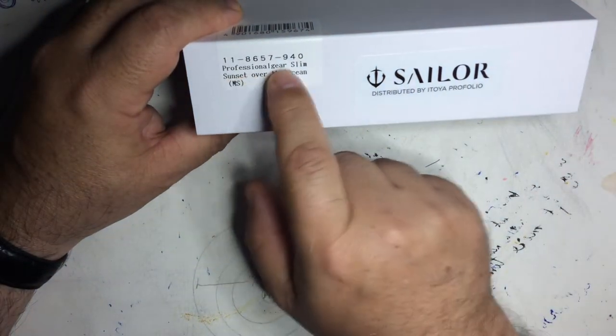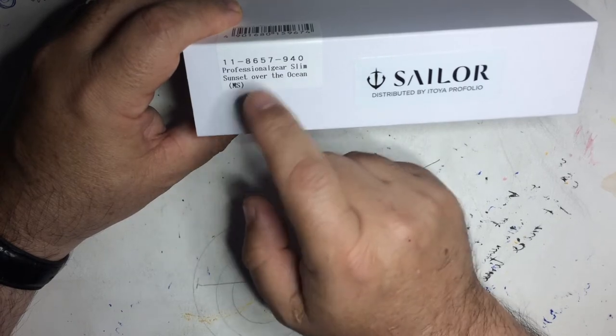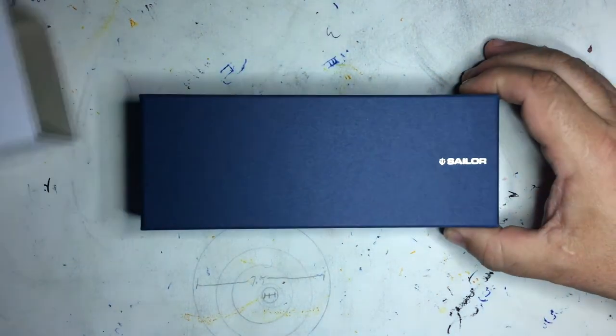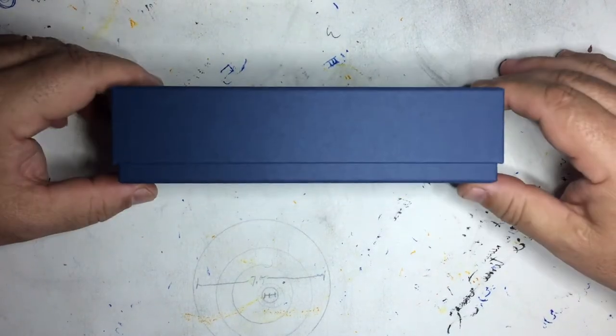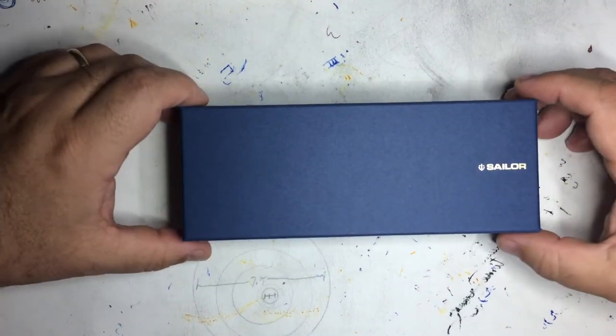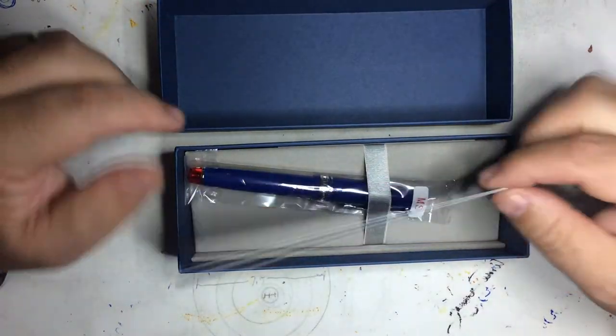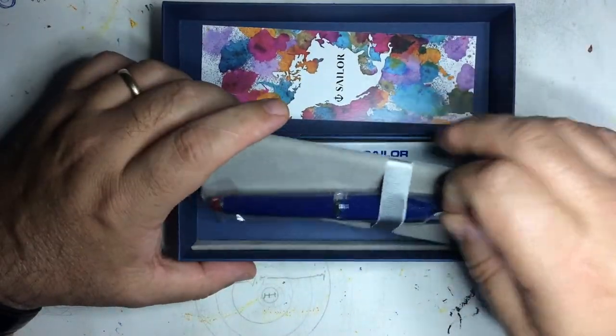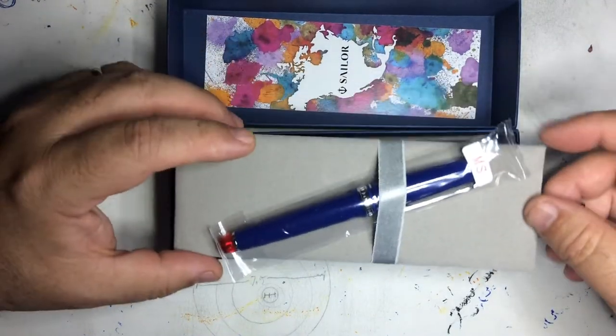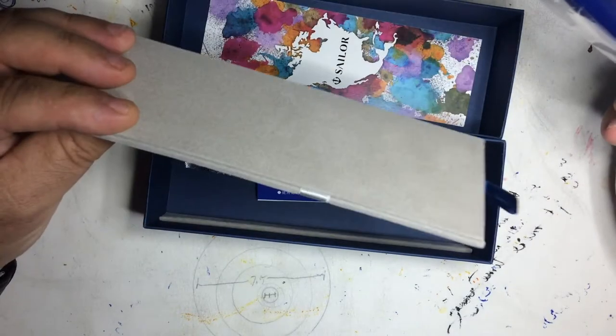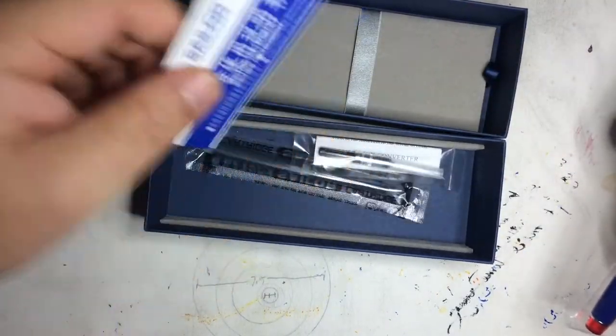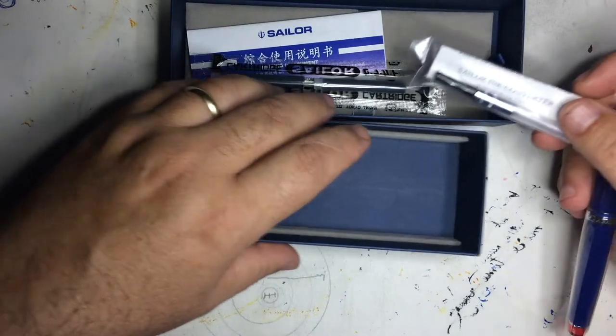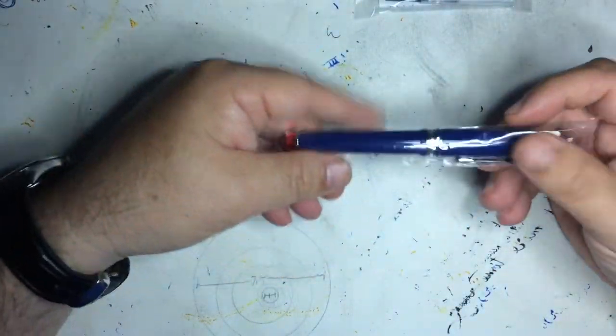This is another Sailor pen, my Pro Gear Slim. It's a different box - instead of the clamshell type box, we have a coffin style box here. When we open it up we have the typical emblem for proof of purchase. We've got the typical items back here: a couple of cartridges, a cartridge converter, and of course this pen right here in the baggie.